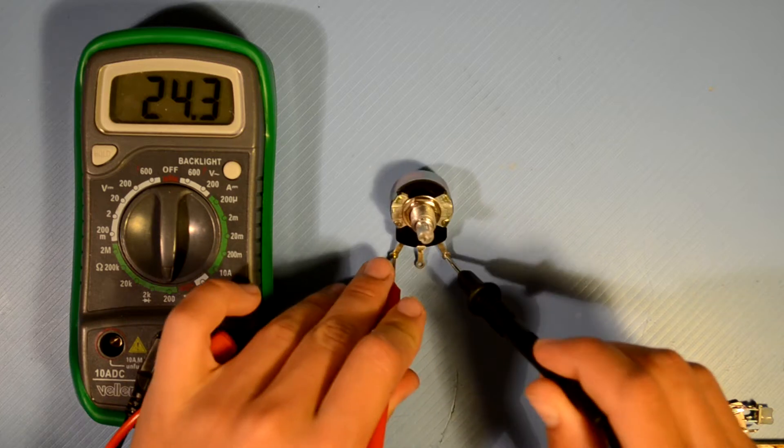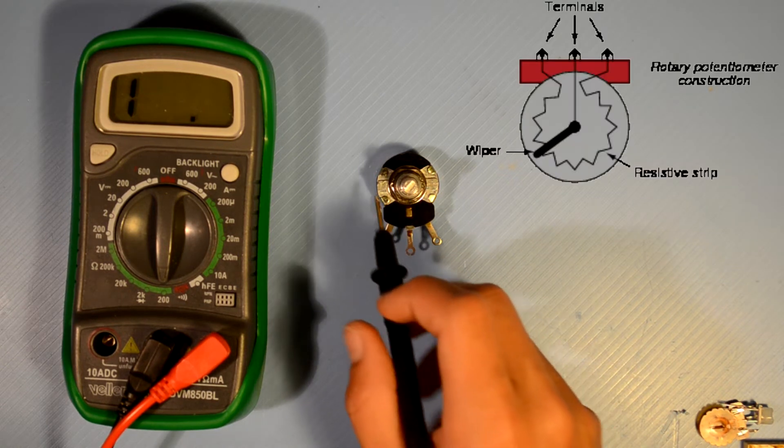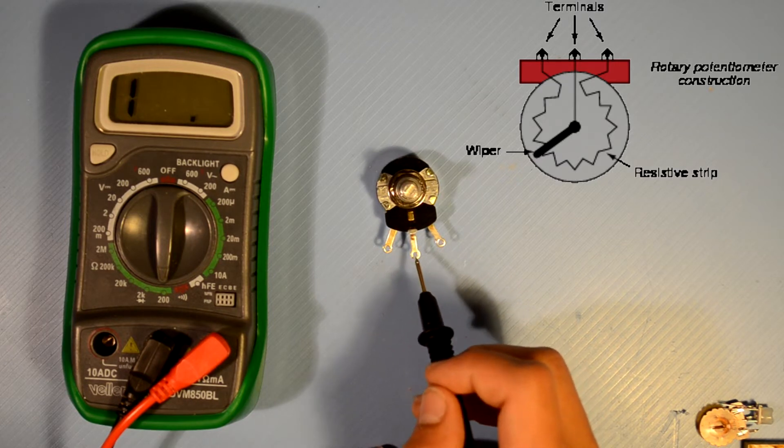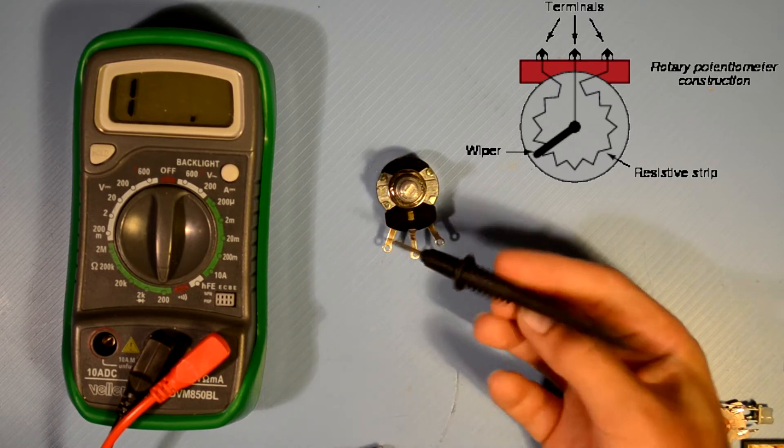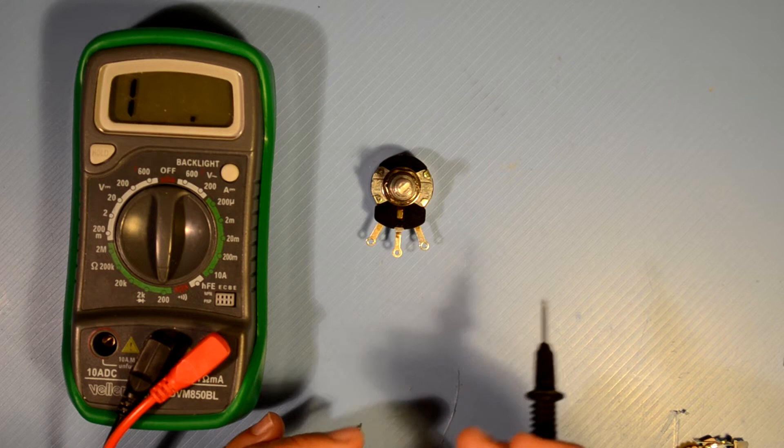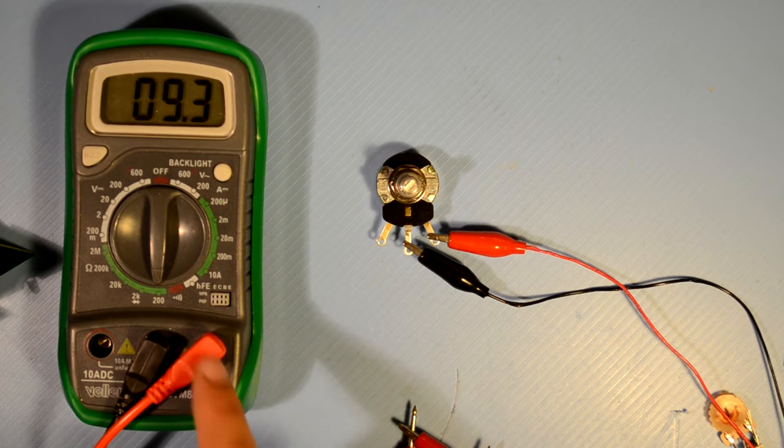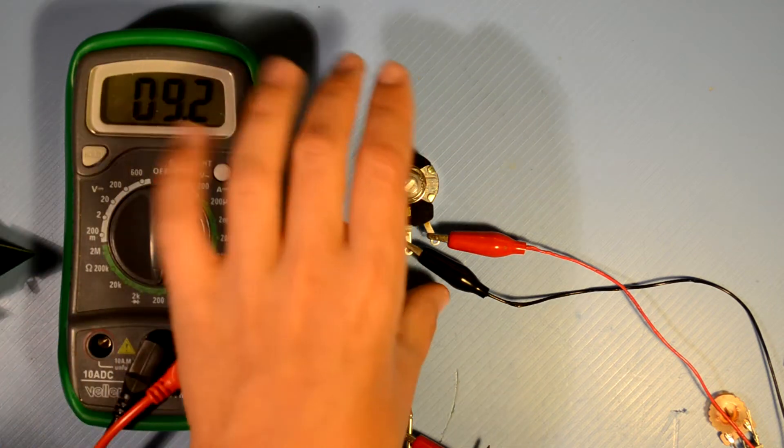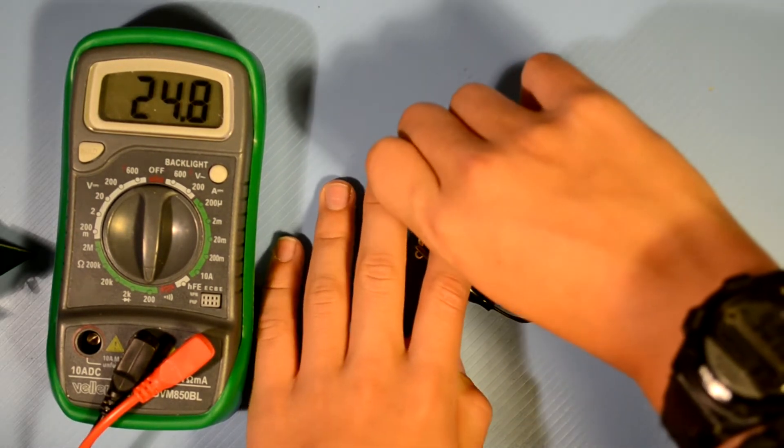That's because I'm on the two outermost pins. Basically, what's in here is a resistor in a circle, connecting to these outer two pins. This center pin is connected to this knob, which is wiping across that resistor. And depending on where it is on the resistor, the resistance changes. For example, if I hook my multimeter up to the middle and any one of the side pins, and I turn the knob, you can see the value change.